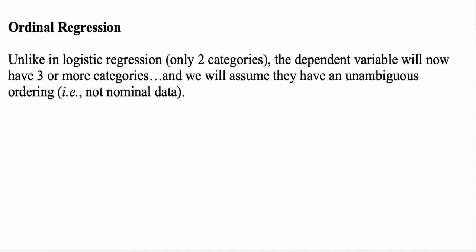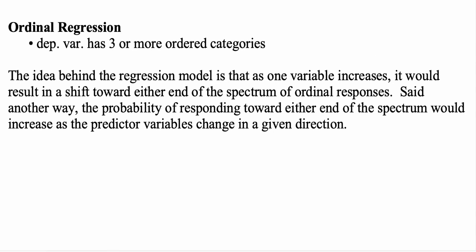Unlike in logistic regression, where we only have two categorical responses for the dependent variable, in ordinal regression the dependent variable can have three or more categories, and we further assume that those categories can be unambiguously put in a specific order — in other words, we don't have nominal data. The idea behind the regression model is that as one or more of the independent variables increases or changes, it results in a shift toward either end of the spectrum of the ordinal response.